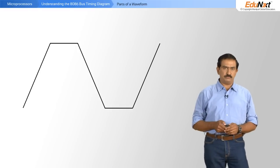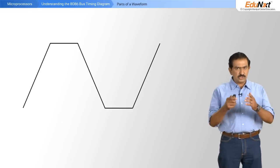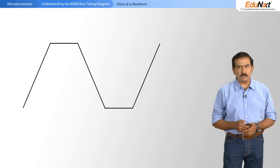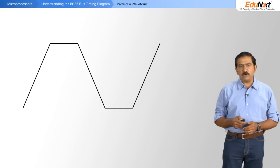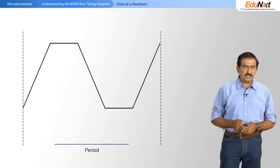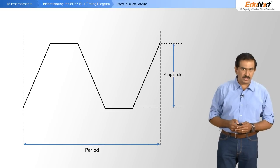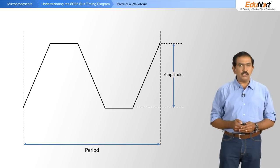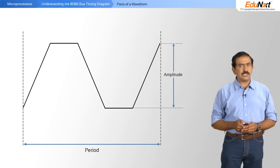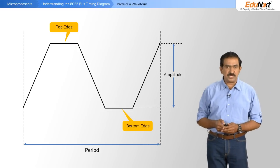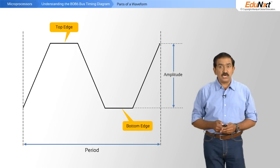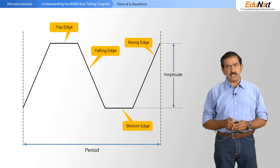Before we begin understanding what bus timing diagrams are, we must understand the various parts of a waveform. What you see on the screen is a typical waveform. A waveform of course has a period and an amplitude. But a waveform also has what is called a top edge, a bottom edge, a rising edge and a falling edge.